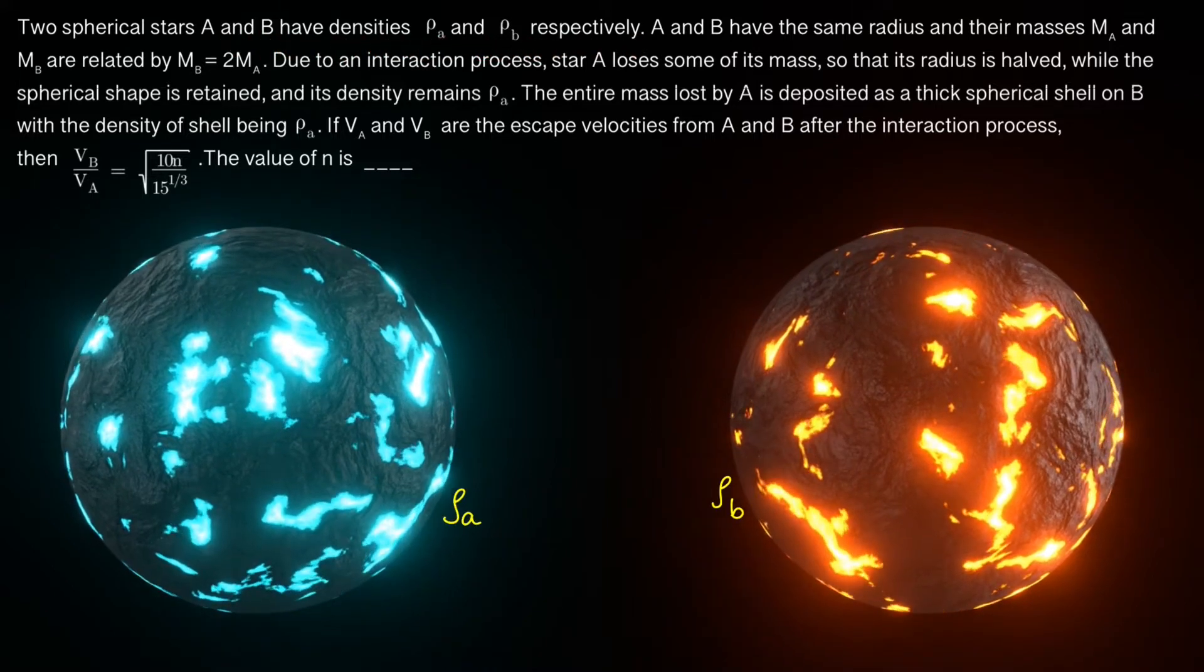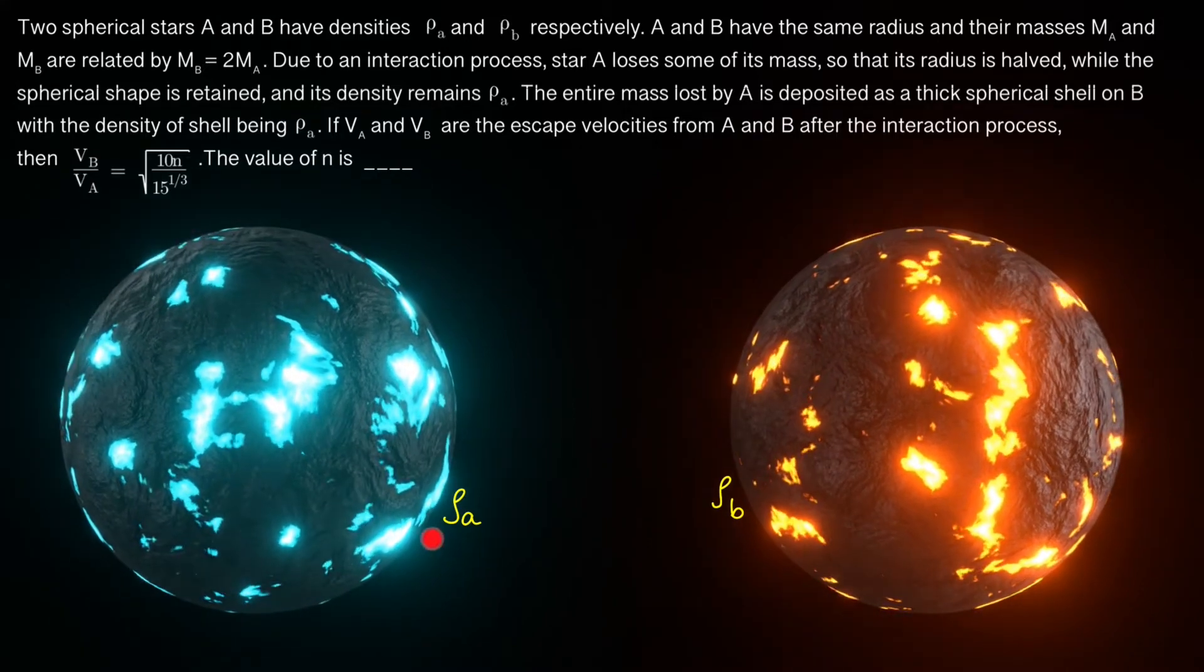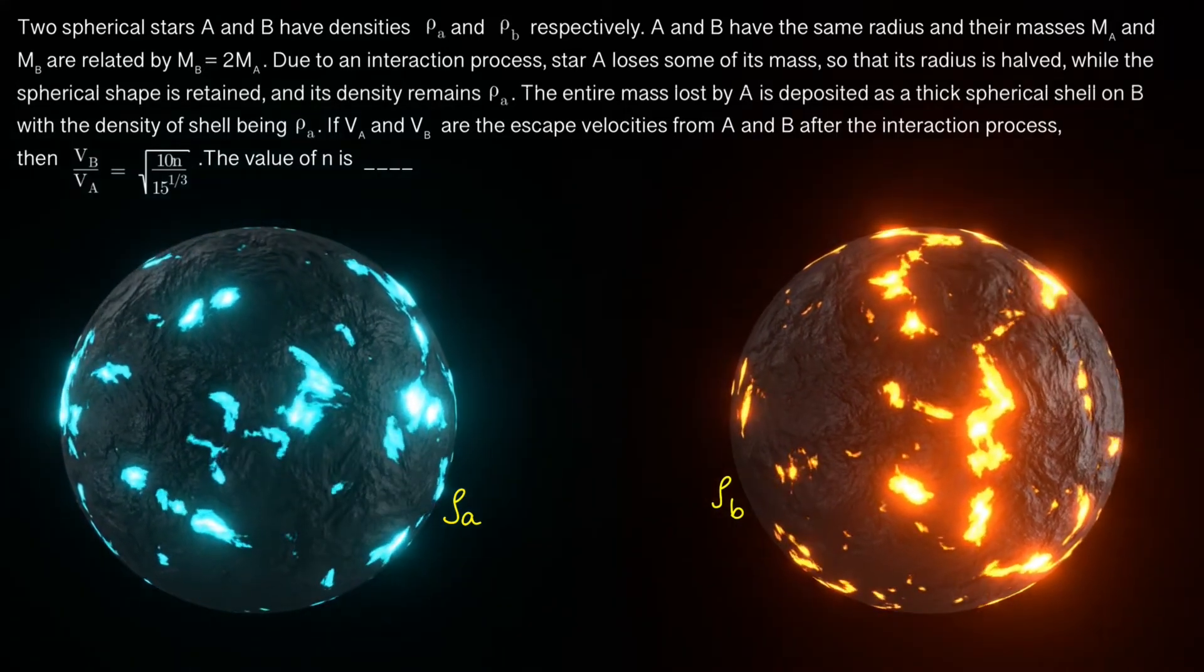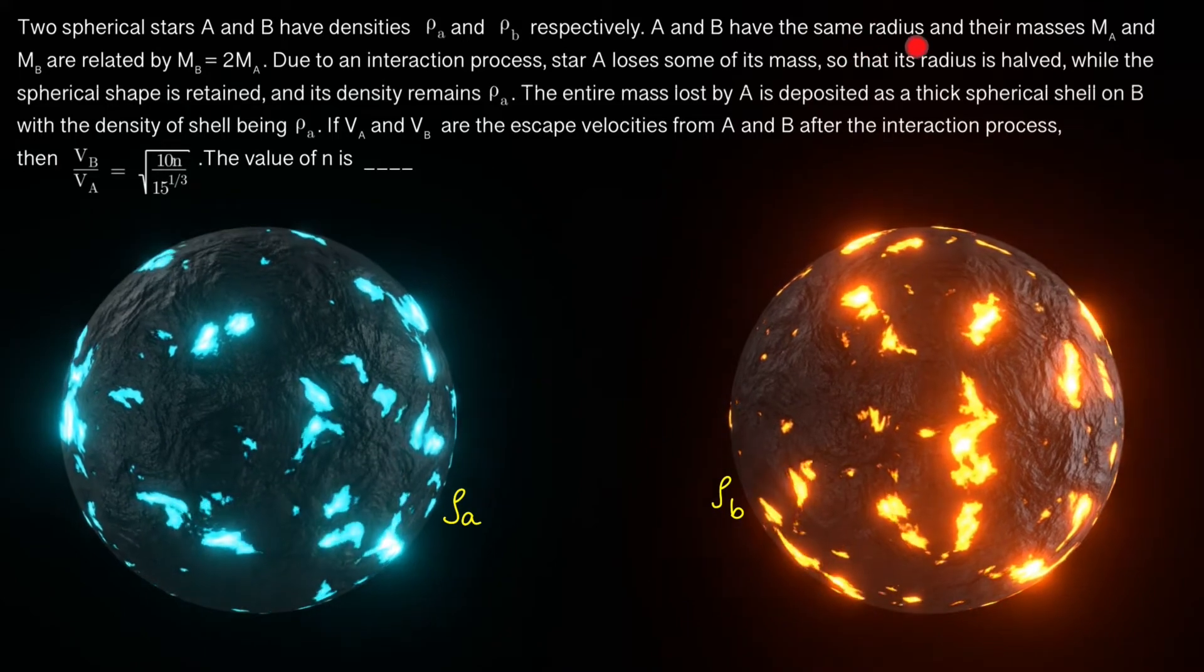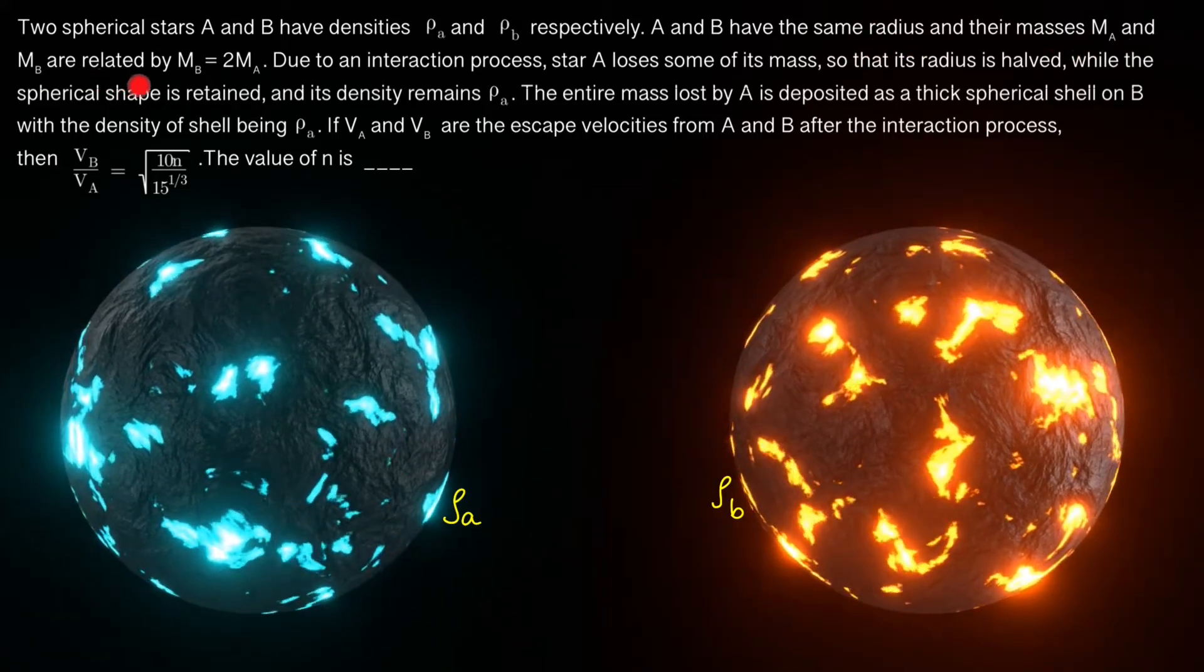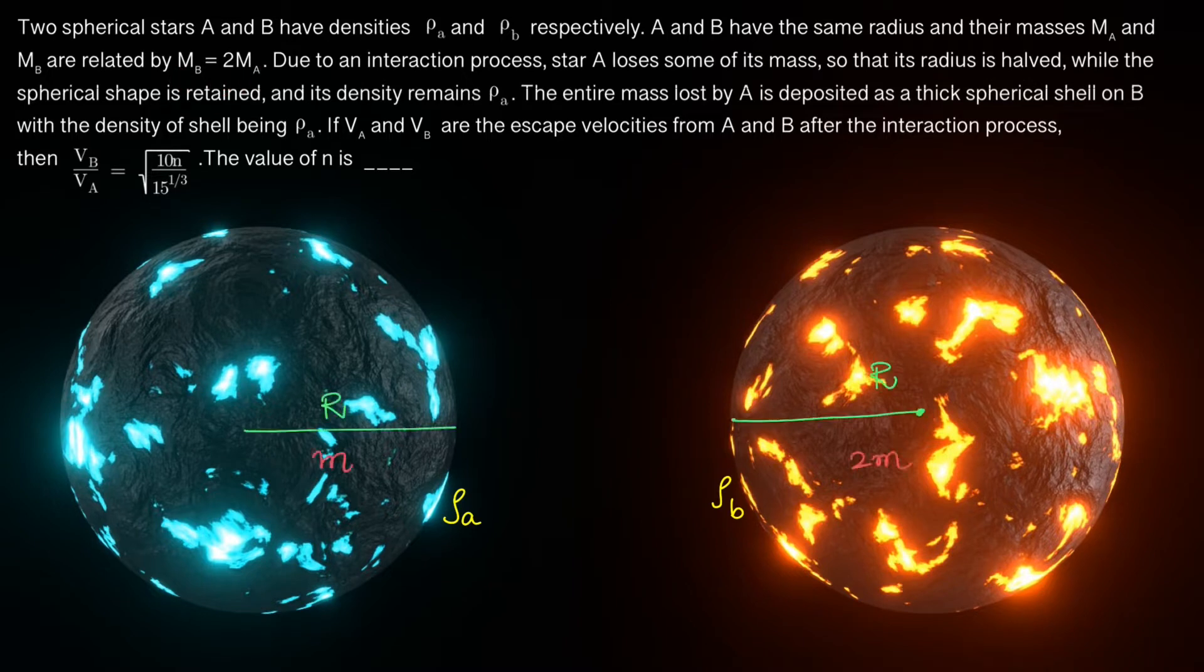So we have two stars here and they have densities ρ_A and ρ_B. A and B have the same radius and their masses M_A and M_B are related by M_B equal to 2M_A. So the mass of this is M and the mass of this is 2M.